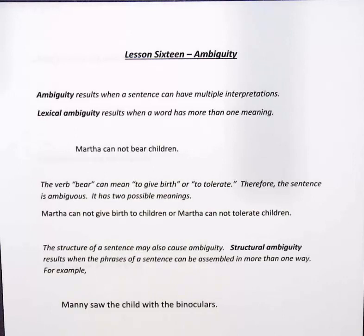There's such a thing called lexical ambiguity, when a word has more than one meaning. For example, 'Martha cannot bear children.' The verb 'bear' can mean to give birth or to tolerate, and therefore the sentence is ambiguous — it has two possible meanings: either Martha cannot give birth to children, or Martha cannot tolerate children.